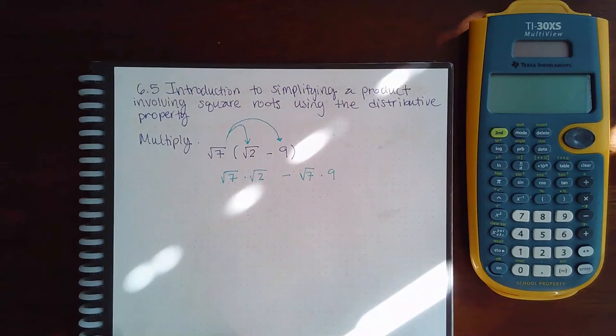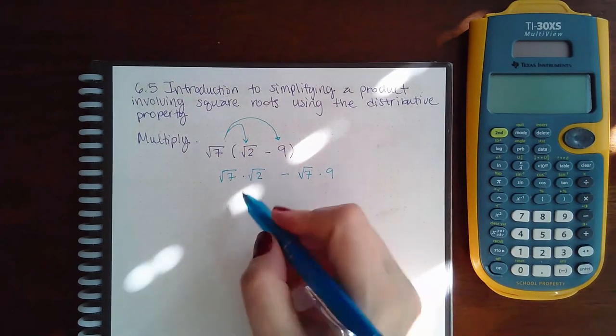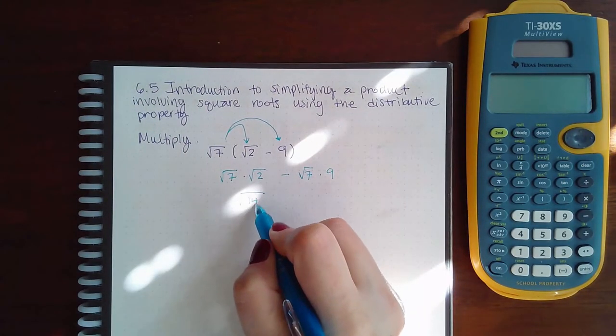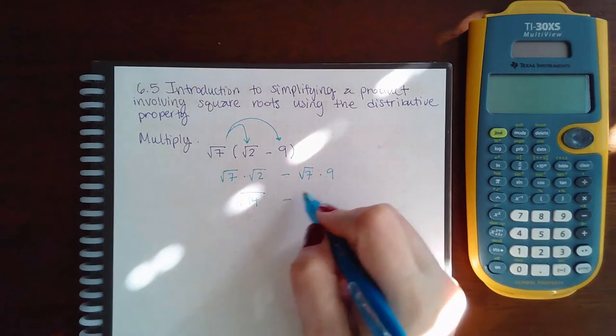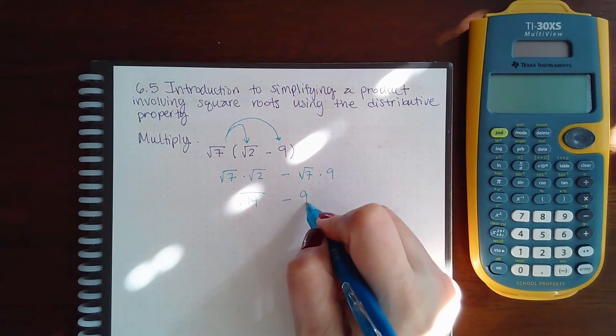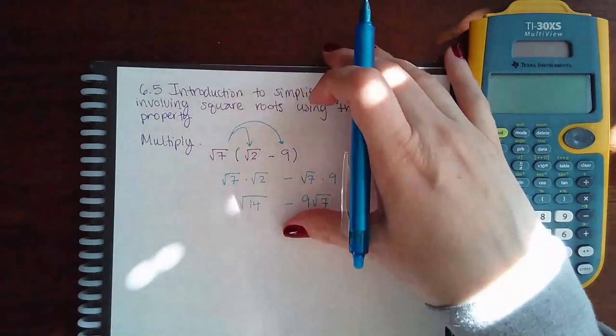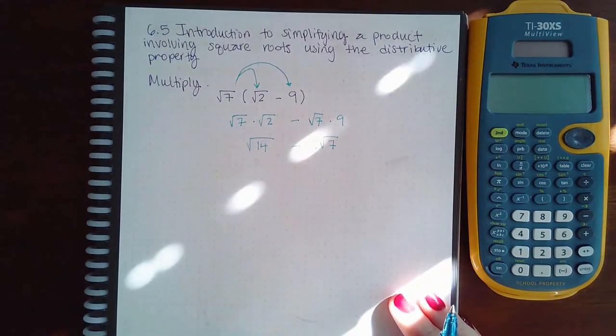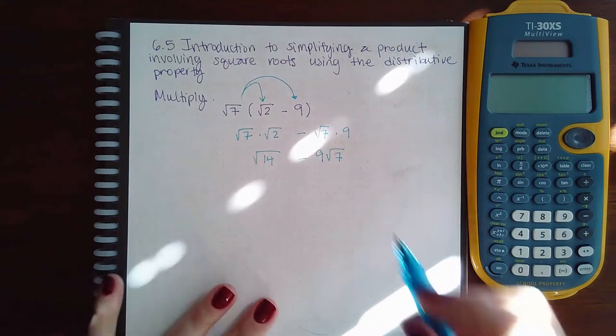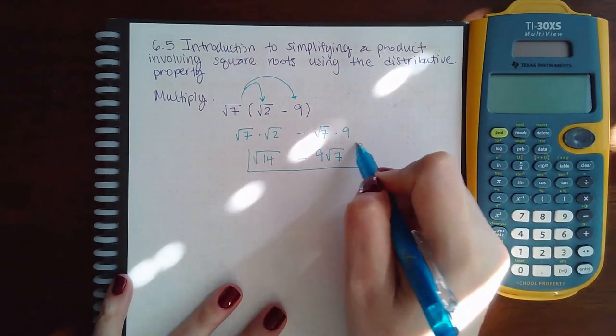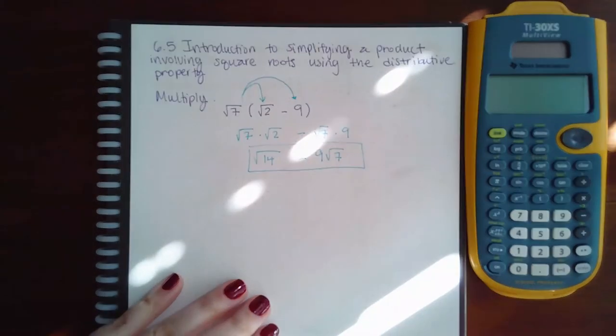Okay, and so then here they're in primes so we could just multiply that together, we get 14. Here the 9 is actually outside the square root and those square roots will not simplify, nothing will reduce or cancel, so that is the final answer: square root of 14 minus 9 square root of 7.